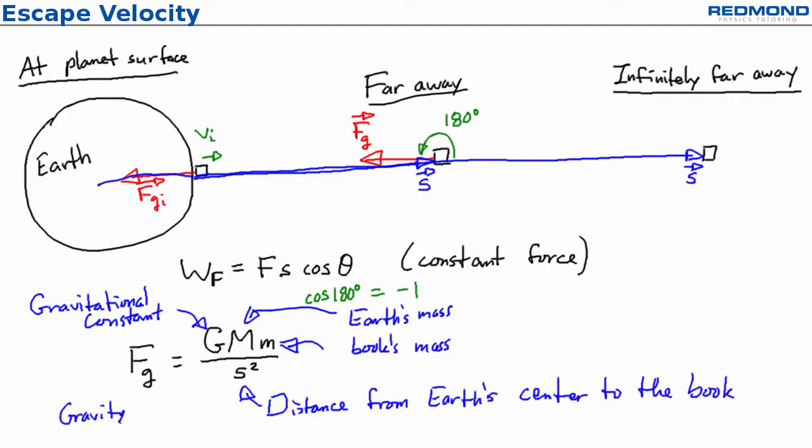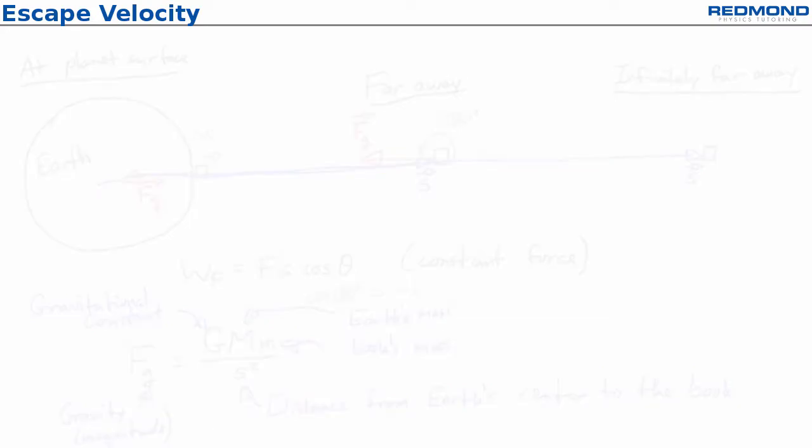Since FG varies with s, we actually need to set up an integral from s equals R at the Earth's surface to s equals infinity when the book is infinitely far away.